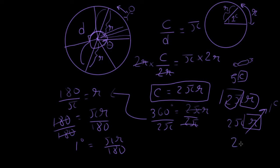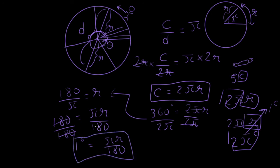So we know two things: one degree equals πr over 180, and there are 2π radians around a full circle. That's all for this video. If you have any questions, mention them in the comments. I will see you next time.